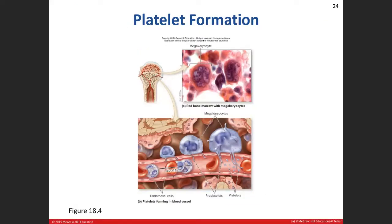The bone marrow makes these megakaryocytes, which grow extensions that squeeze in between the simple squamous epithelium — the endothelium — of a capillary. The blood flow pulls off pieces of the cell, and those little tiny pieces that get pulled off are the platelets, which are responsible for blood clotting.